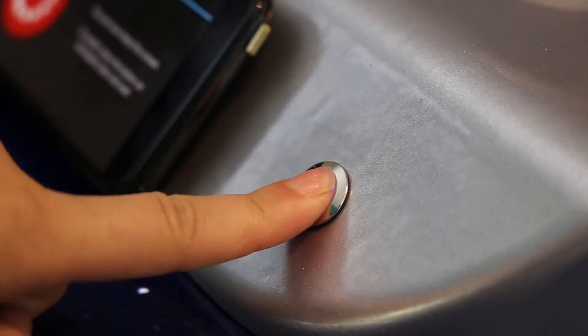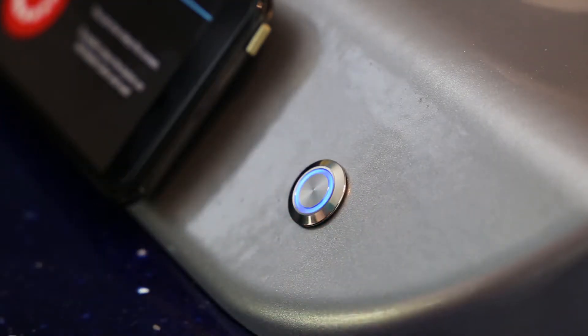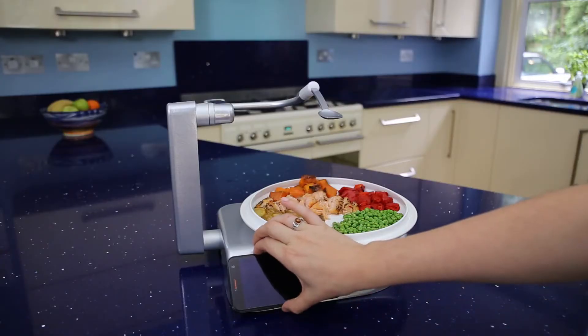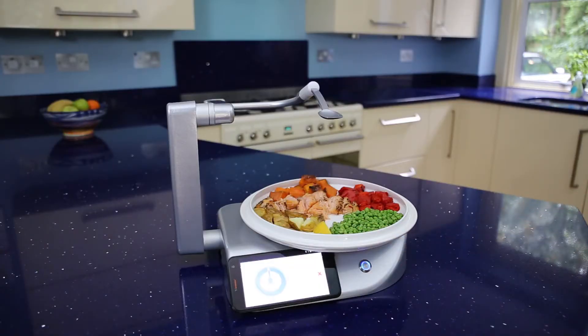First, turn on your robot by holding the power button until it lights up. Then, turn on your tablet by holding the tablet power button. Then you can enjoy your meal.